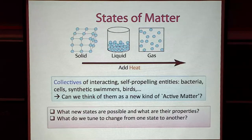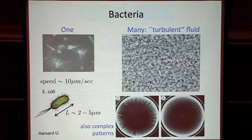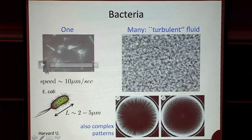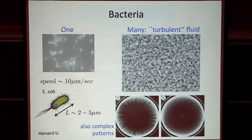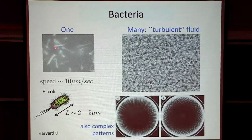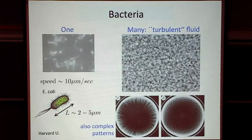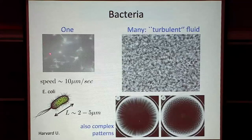Let me start with a few quick examples. A simple example is bacteria — this is E. coli. Jeff Guasto will tell you more about how individual bacteria swim. E. coli is a body about 2 to 5 microns long with a long tail of flagella, and it swims by a characteristic motion called run and tumble: it goes in a straight line for a while, then spreads out its tail and changes direction substantially. E. coli typically swims at a speed of about 10 microns per second.